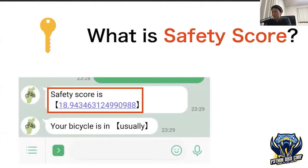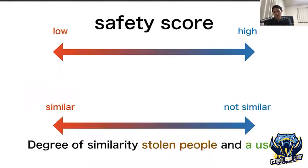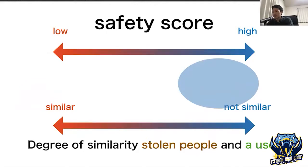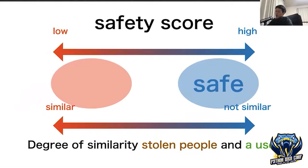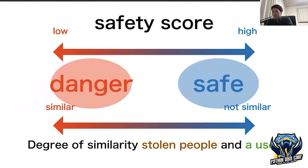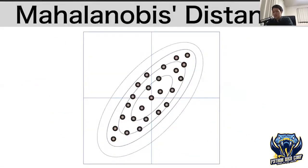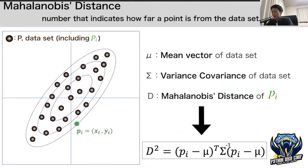But what is the safety score? The safety score is the degree of similarity between stolen people and a user. A high safety score indicates that user data is not similar to the features of stolen people — it means safe. On the other hand, a low safety score indicates that user data is similar to the features of stolen people — it means dangerous. To calculate the safety score, I use Mahalanobis distance, which is calculated from the mean vector and variance-covariance matrix of the dataset.